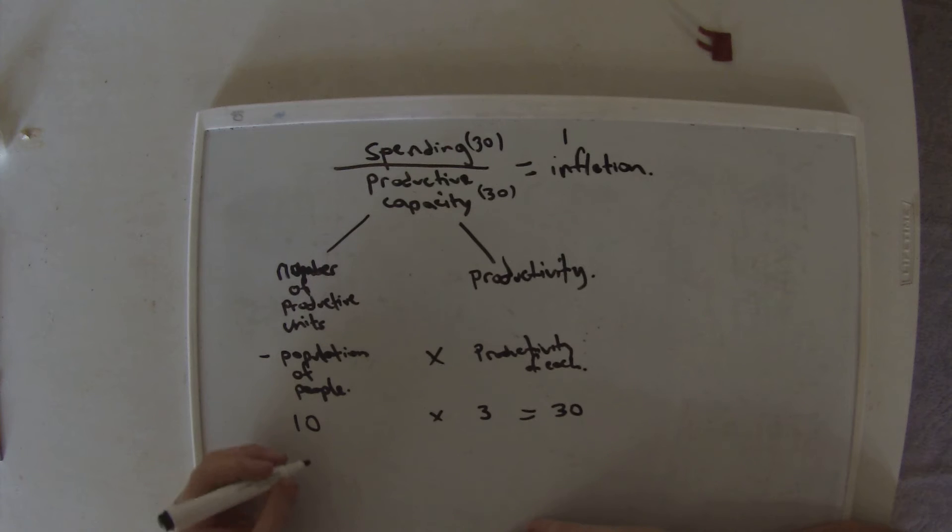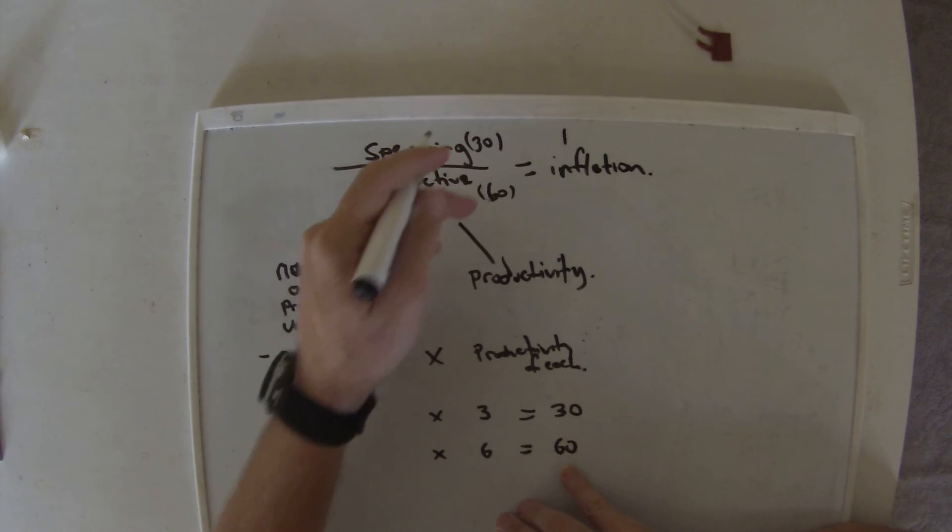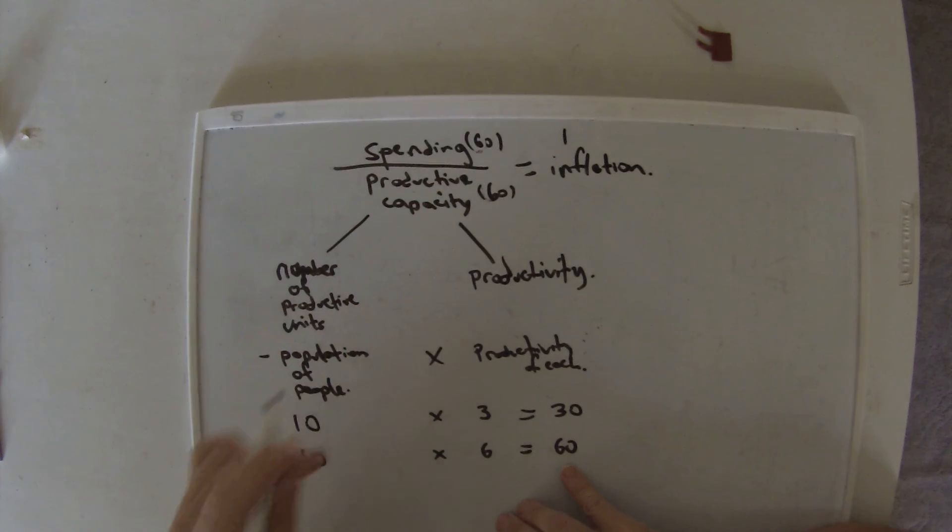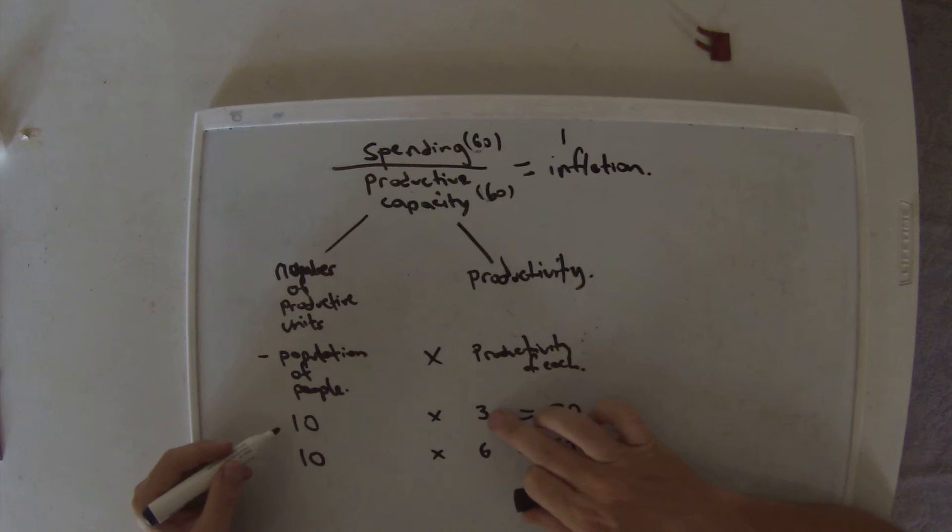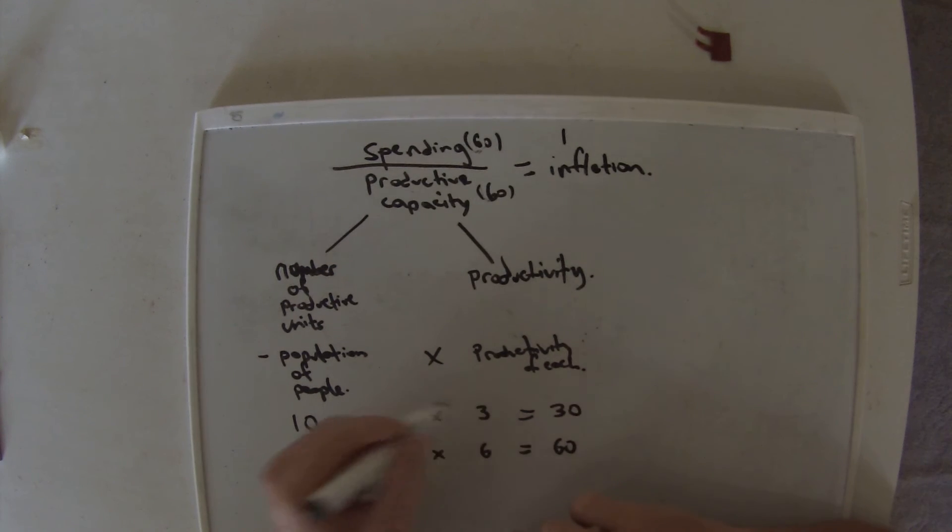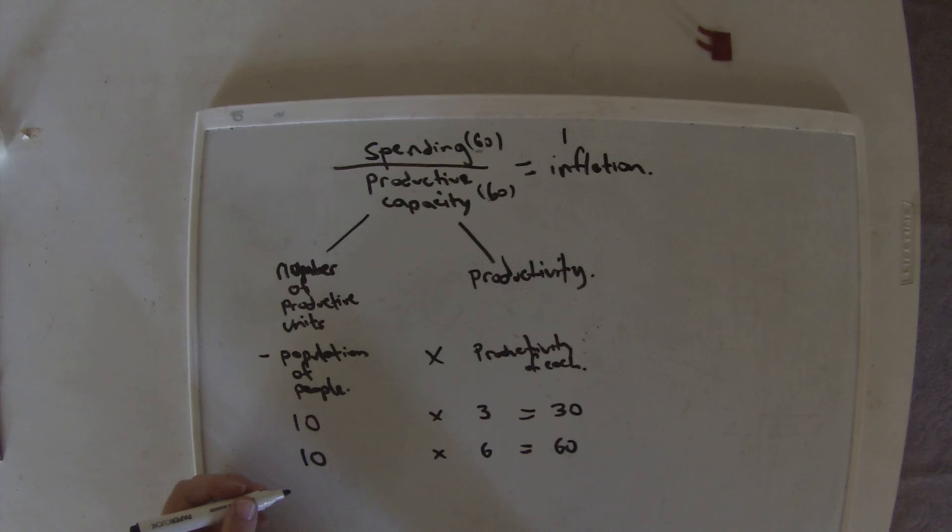If our productivity doubled, we'll keep our population the same times by 6, now the productivity's doubled. Our productive capacity is 60 units, so you have to change in here to 60. Therefore our spending would jump up to 60, and that would mean your wages have increased. Before you're getting 30 dollars amongst 10 people, but now you're getting 60 dollars amongst 10 people. So 3 dollars per person becomes 6 dollars per person. Now each person can afford about six things per person.